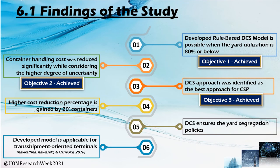Conclusions. In our study, we explored six findings. First, the developed rule-based dynamic container stacking model is applicable when yard utilization is 80% or below, meaning objective 1 is achieved. Second, container handling cost was reduced significantly while considering a higher degree of uncertainty, meaning objective 2 is achieved. Third, the dynamic container stacking approach was identified as the best approach compared to static container stacking. Fourth, the higher cost reduction percentage is gained by 20-foot containers. Fifth, dynamic container stacking ensures yard segregation policies compared to static stacking. Sixth, the developed model is applicable for transshipment-oriented terminals.